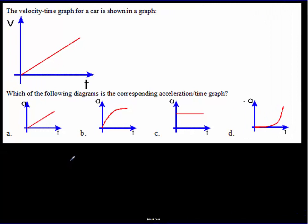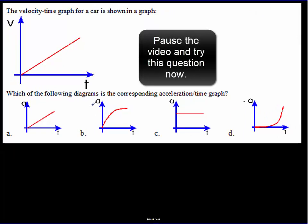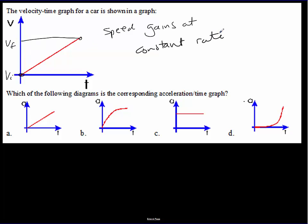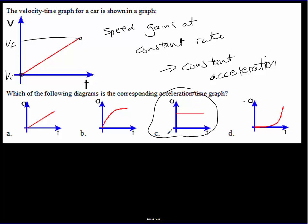Looking at a velocity-time graph where speed gains at a constant rate: you've got uniform, constant acceleration. It's a straight line on the VT graph — a constant rate of speed gain means constant acceleration.